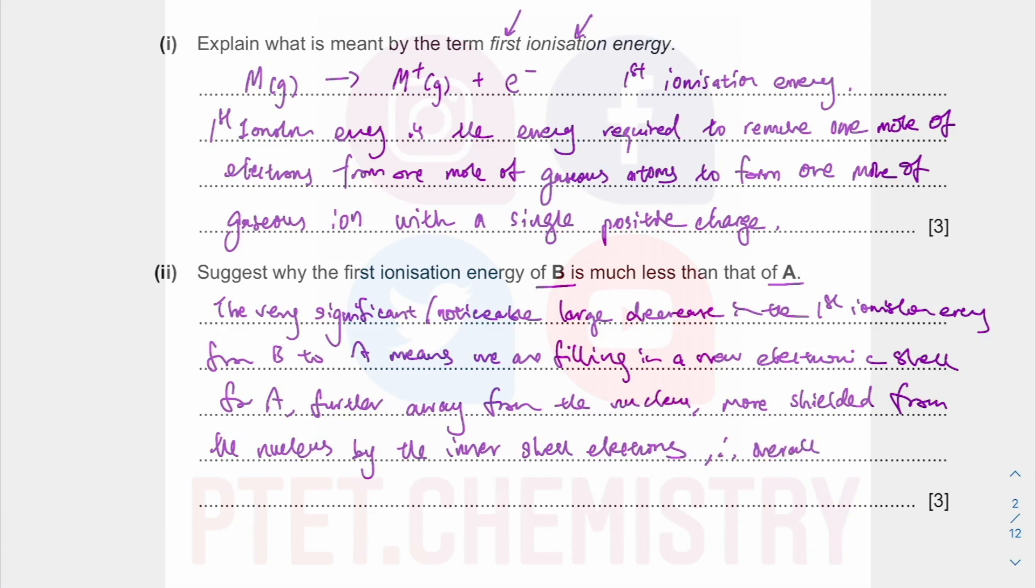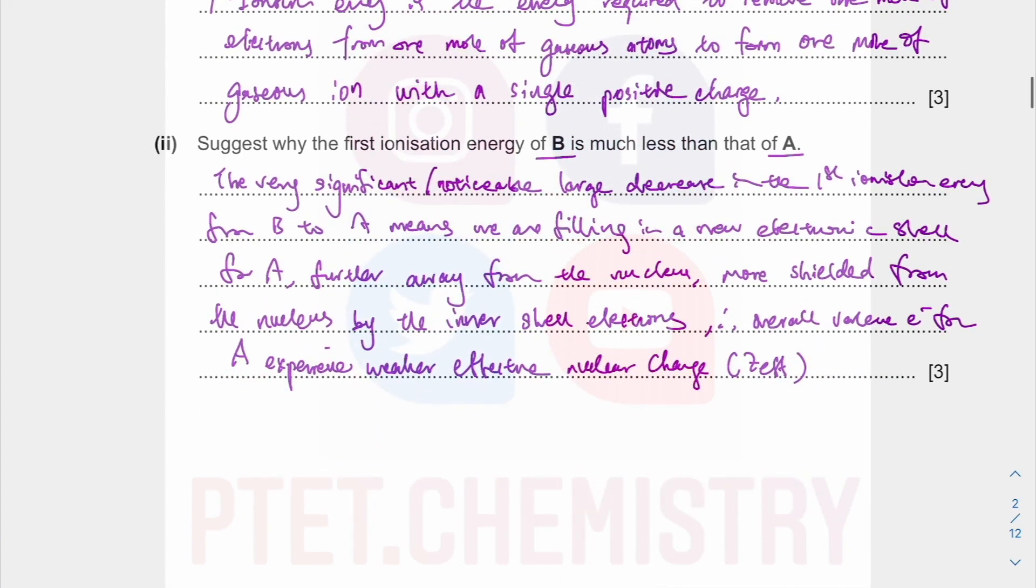Therefore, overall valence electrons for A experience weaker effective nuclear charge, which is taking into account the shielding effect. So that's just the Z-effective. Therefore, a lot easier to remove. Therefore, a lot easier to remove the valence electron for A than B.